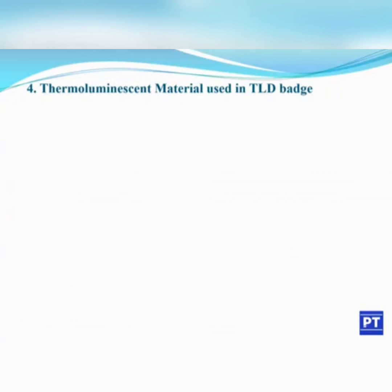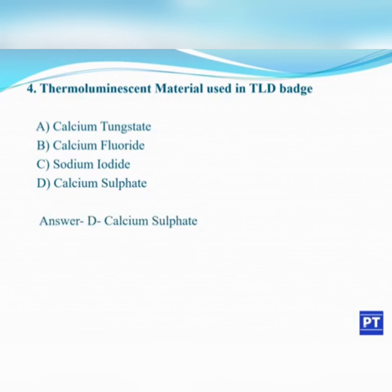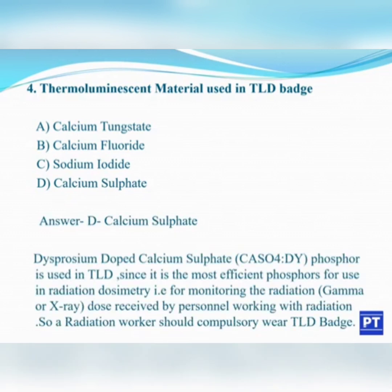Fourth question: which is the thermoluminescent material used in a TLD badge? A. Calcium tungstate, B. Calcium fluoride, C. Sodium iodide, D. Calcium sulfate. The answer is D, Calcium sulfate dilide, since it is the most efficient phosphor to use in radiation dosimetry.